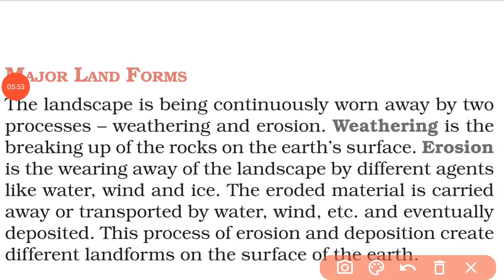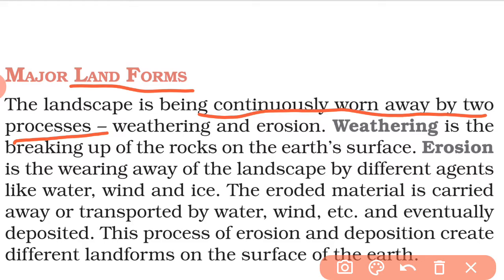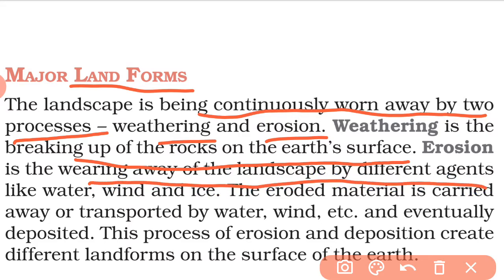Next are major landforms. The landscape is continuously worn away by two processes: weathering and erosion. Weathering is the breaking up of rocks on the earth's surface. Erosion is the wearing away of the landscape by different agents like water, wind, and ice.